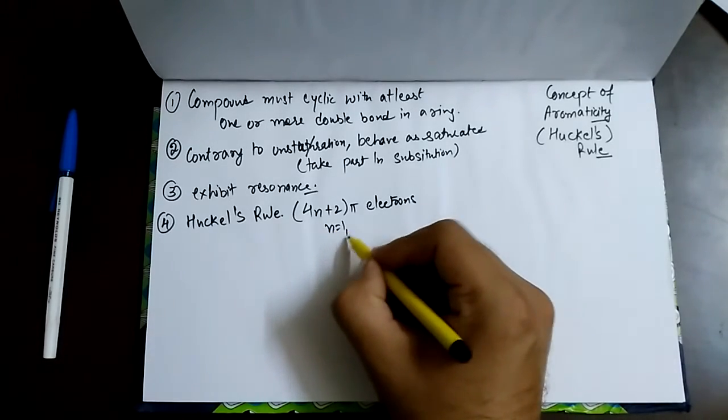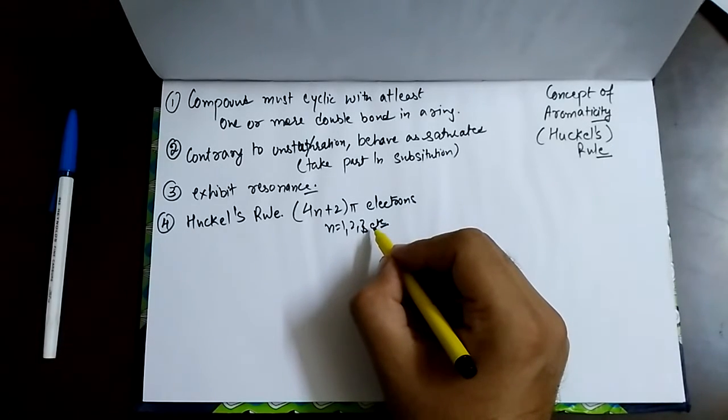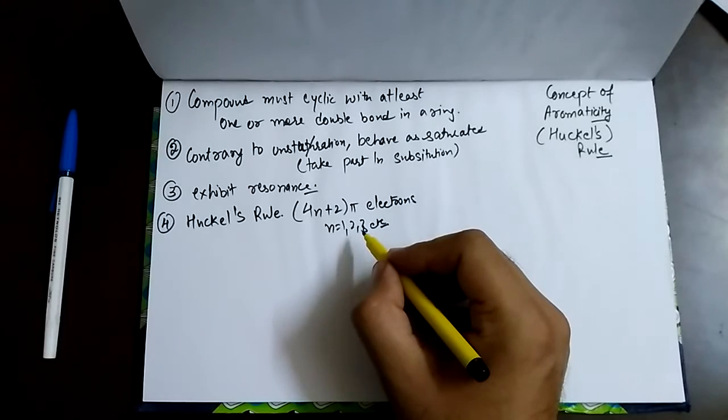Where n may be 1, 2, 3, etc. I'll give you a few examples so you'll understand easily.